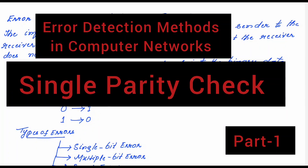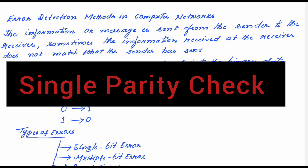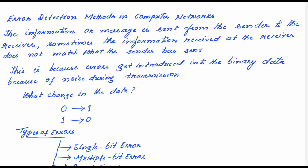Welcome to this video lecture series in computer networks. Today's topic of discussion is error detection methods. This topic can be included in the data link layer of the OSI model. In this session I shall be discussing the different error detection methods — normally we have error detection and correction methods, but here I shall be discussing only the detection methods.